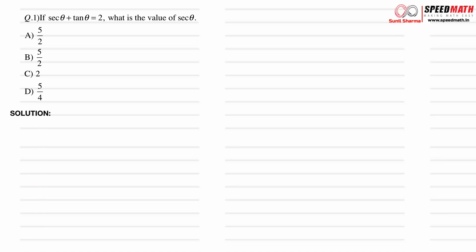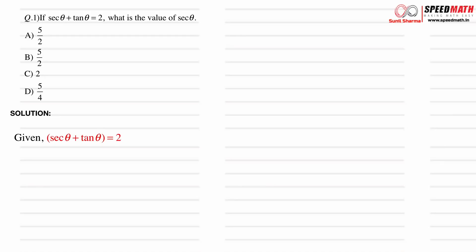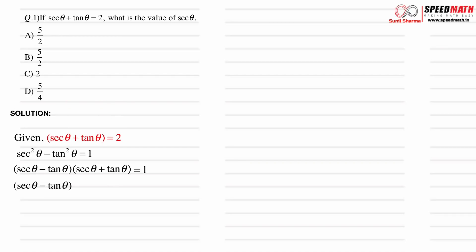Here is the first question: if sec θ plus tan θ equals 2, what is the value of sec θ? You have 10 seconds to think about it. Now, since sec θ plus tan θ equals 2, we can use the identity sec²θ minus tan²θ equals 1. Applying the difference of squares formula, we get (sec θ minus tan θ)(sec θ plus tan θ) equals 1. Since sec θ plus tan θ is 2, we plug that in and get sec θ minus tan θ times 2 equals 1.